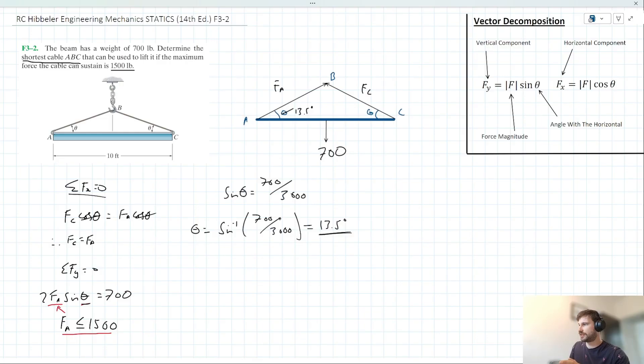So this ultimately becomes a very simple trigonometry problem. I probably should have added a little more information to our FBD up here. I should have noted that this beam is 10 foot in length.